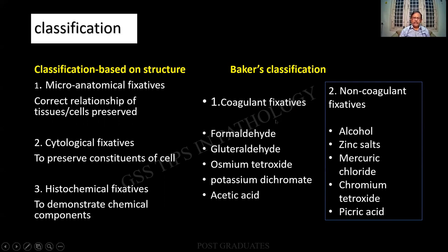There is another method of classifying called Baker's classification. This person has contributed a lot to histopathological techniques. One is coagulant fixatives, which are again divided into the many aldehydes — formaldehyde, glutaraldehyde, etc. — oxides such as tetroxide, potassium dichromate, and acetic acid. The next one will be non-coagulant fixatives, which include the panel seen below. Kindly memorize this particular classification; it is worth its weight.